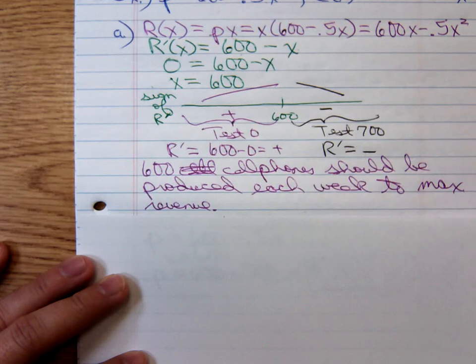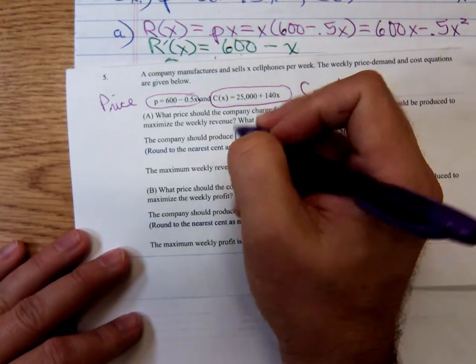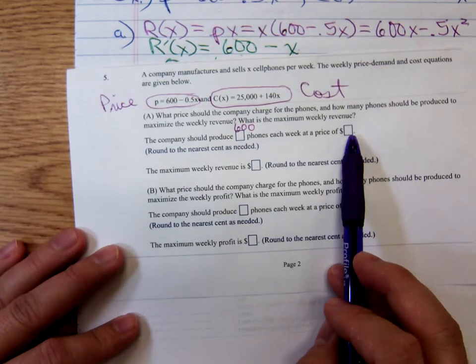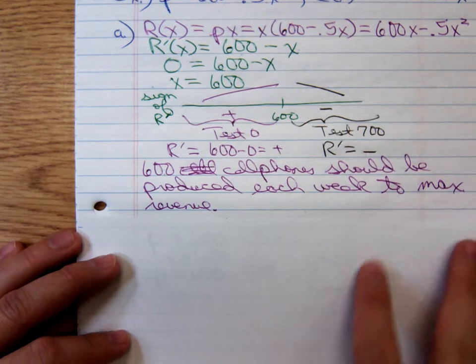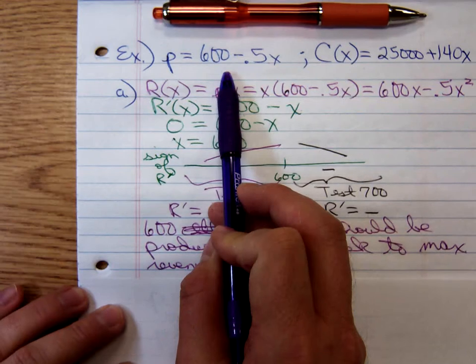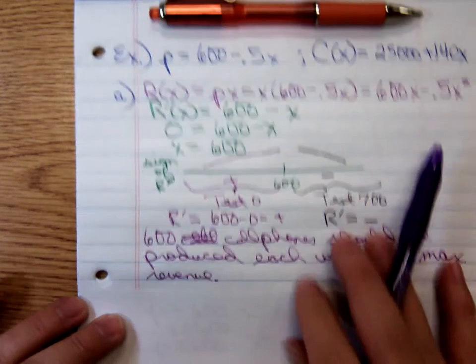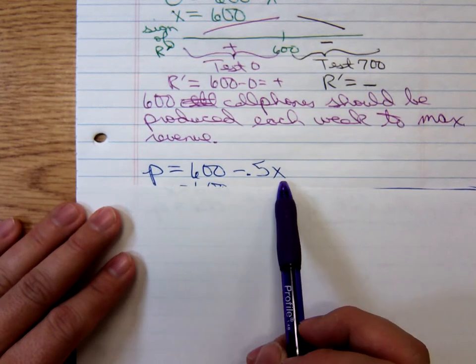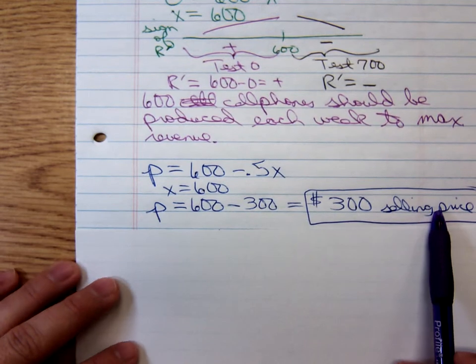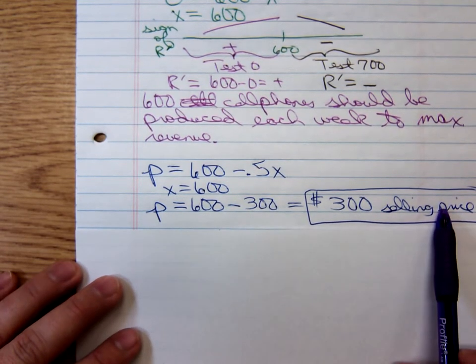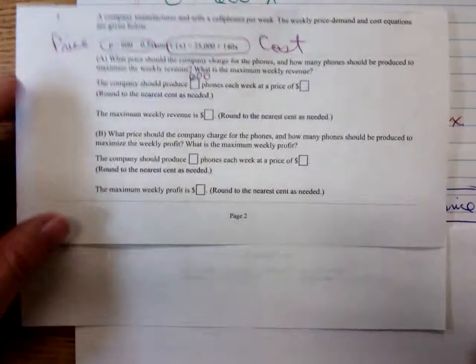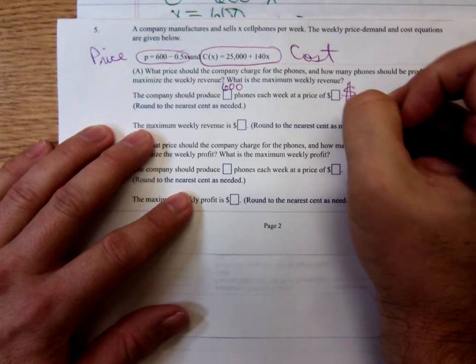And I'd even summarize this next statement, writing out, 600 cell phones should be produced each week to maximize revenue. Well, they also wanted to know the price they should charge. Plug that 600 into the price function up here at the top. Plug in 600 into the price function. There's the price function. Plug in the 600. We get a nice selling price. They should sell each one of those things for $300.